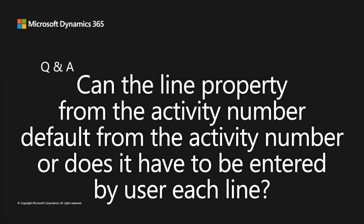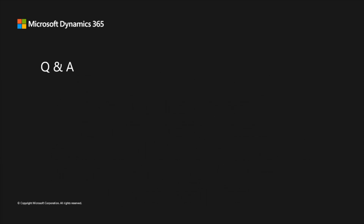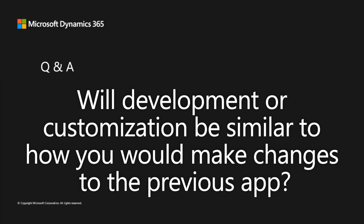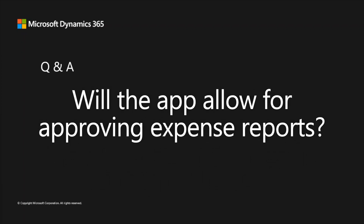Can the line property from the activity number default, or does it have to be entered by the user on each line? This follows the configuration set against the activity in the web application — if it is set as a default there, the same behavior works in the mobile app, so no need to fill it in if it is already defaulted. Will development or customization be similar to the previous app? No — this is a totally different app built using Power Platform canvas app capabilities. Customization now involves a combination of X++ on the F&O side and Power App-side changes. Will the app allow approving expense reports? Yes — not immediately, but before GA, approval capabilities will be added so managers can approve expense reports from the mobile app.